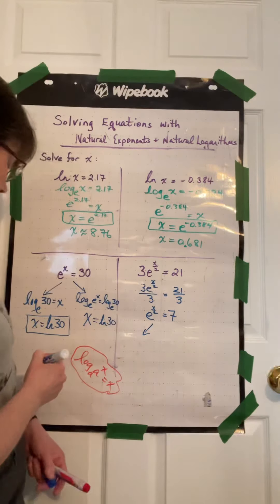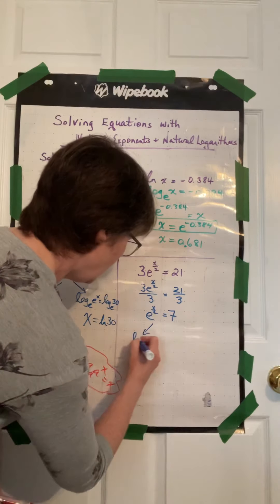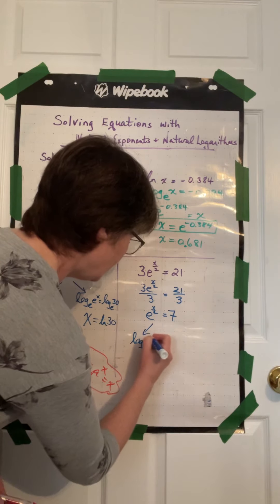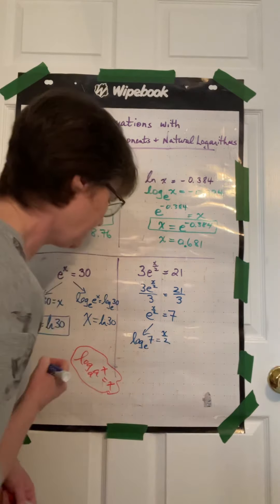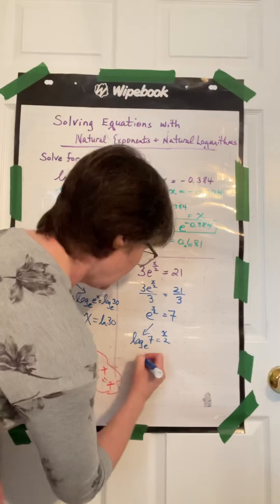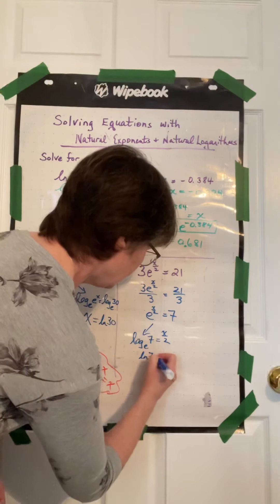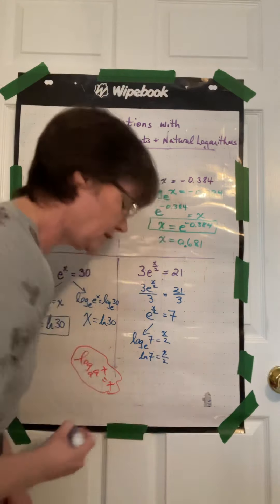We can rearrange. So we would have log base e of 7 is equal to x over 2. This is actually ln 7 equals x over 2 for proper notation.